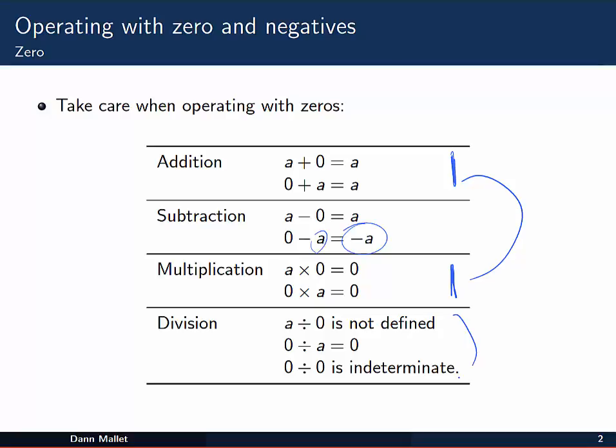Division, the most tricky one of all. Let's see, zero divided by a, that's pretty easy. Zero on a is zero, always. Except when the thing on the bottom is zero. That's where it gets tricky.